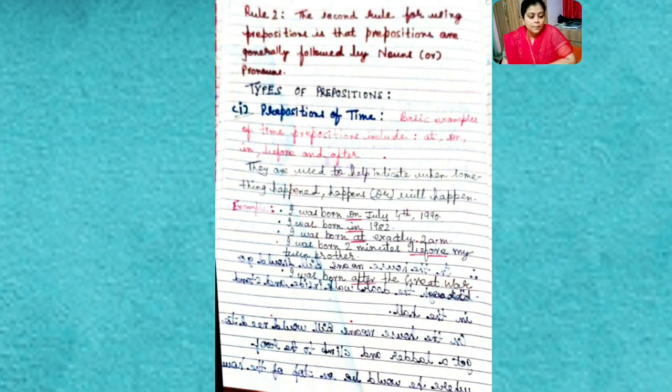Look at this: I was born on July 4th, 1990. I'm not talking about myself, okay? I was born on July 4th, 1990—please underline this, you can see the underline 'on' here. I was born in 1990—'in' here. I was born at exactly 2 a.m.—'at' here. I was born two minutes before my twin brother. Last one: I was born after the great war happened.